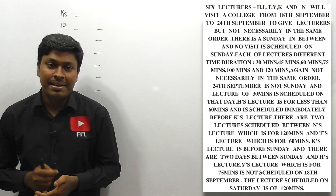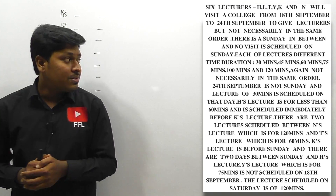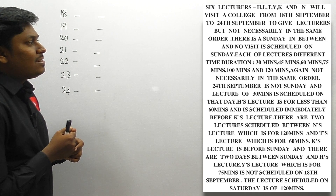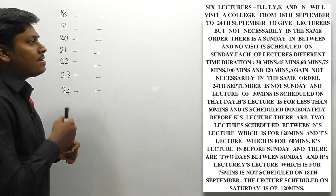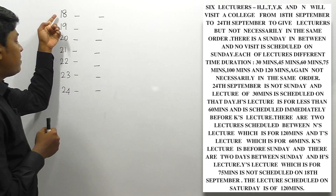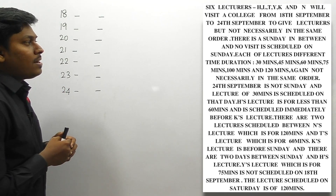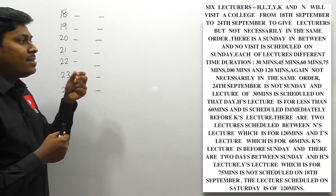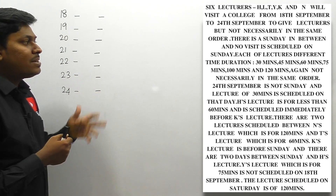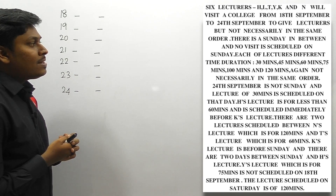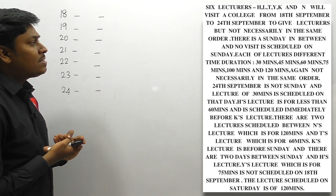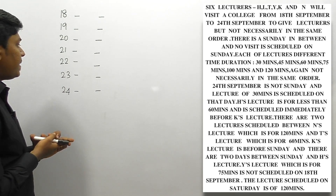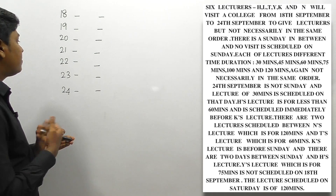Let me move on to puzzle number 19. Six lecturers — H, L, T, Y, K, N — will visit a college starting from 18th September to 24th September. Each lecture is scheduled for different timings: 30 minutes, 45 minutes, 60 minutes, etc. There is a Sunday in between and no lecturer is scheduled on Sunday, so we need to find which day is Sunday.